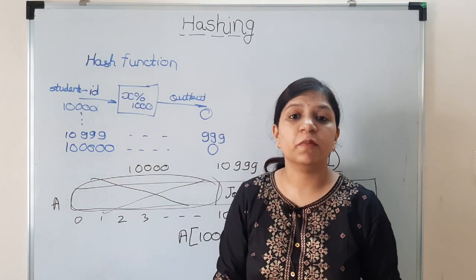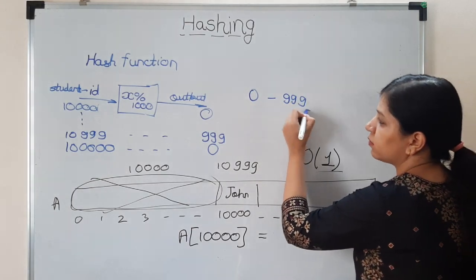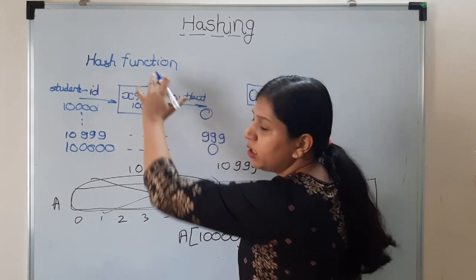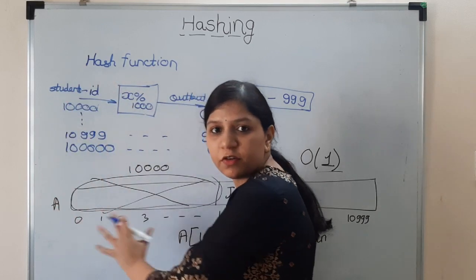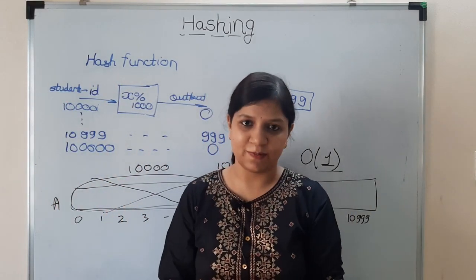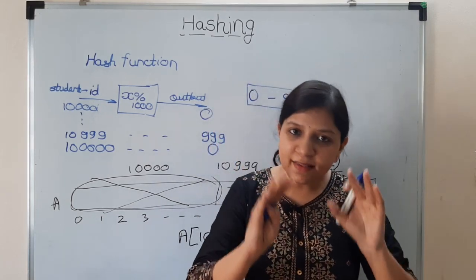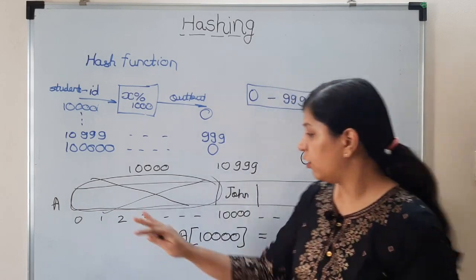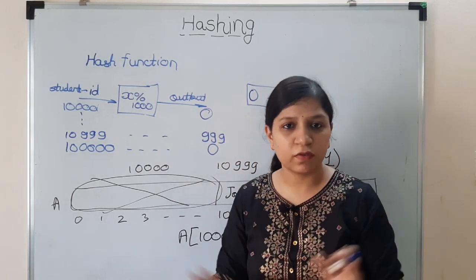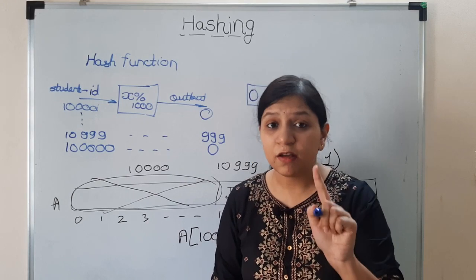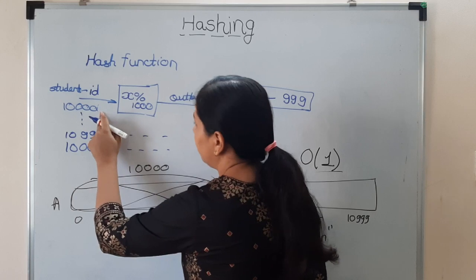It means any value I give of the student ID, it is going to give me the output from 0 to 999. So hash function is used to make arbitrary data - you have arbitrary data here - to make it fixed size. That's why we use hash function. Because of this, less amount of memory is going to be wasted. Here we were wasting this memory. Now it will help us in reducing the memory wastage.